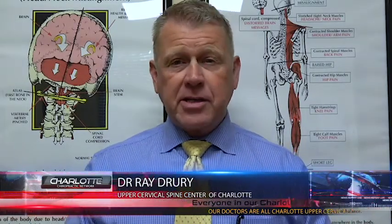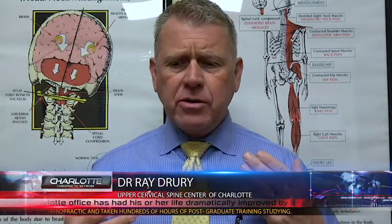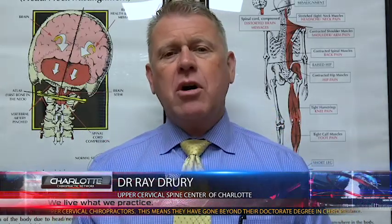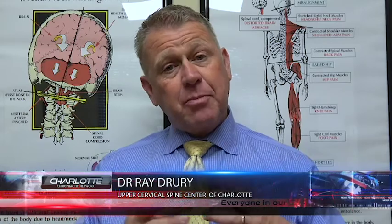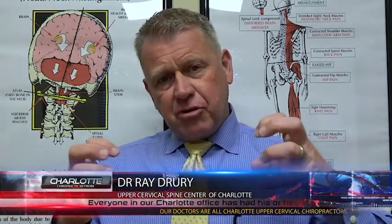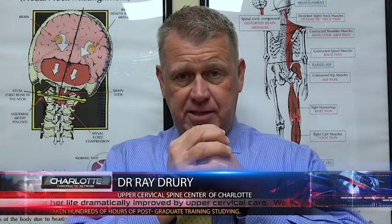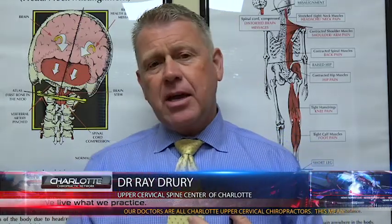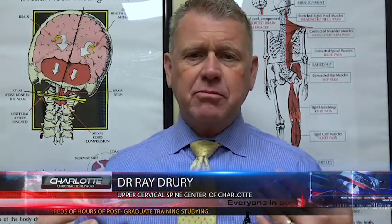Hi, Dr. Ray Drury here with the Upper Cervical Spine Center. I want to talk to you about neck spasms or back spasms. Where do spasms come from? What causes a muscle to spasm? First of all, a spasm is when a muscle contracts continuously and doesn't want to let go. What would cause that? A muscle spasms to protect itself — it's literally a protective mechanism to try to protect the muscle from tearing, to keep something from ripping or tearing.